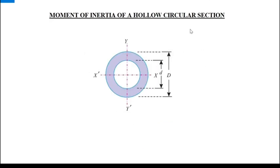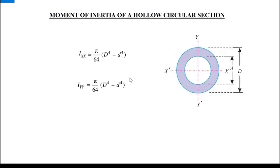For a hollow circular section, similar to the hollow rectangle: Ixx = (π/64)(D⁴ − d⁴), and Iyy = (π/64)(D⁴ − d⁴). We can also write this as (π/4)(R⁴ − r⁴), where R and r are the outer and inner radii respectively.